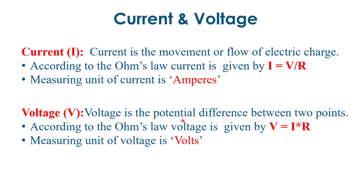Voltage is basically the potential difference between two points. Current is the movement of electric charge, while voltage is the potential difference between two points. According to Ohm's law, voltage is given by V = I × R. The measuring unit of voltage is volts.